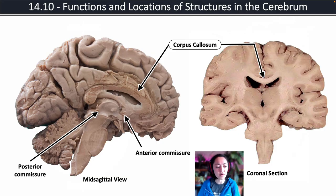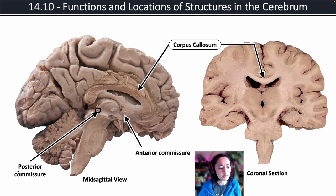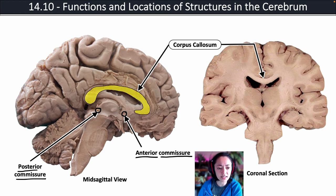Let's look at an image of the brain. Here you can see some of the connections between the right and left hemisphere. In this mid-sagittal view, there is a connection known as the posterior commissure — it's really small. And in the front, we have the anterior commissure, which is also really small. The corpus callosum is the largest connection, located above the lateral ventricles, highlighted in yellow on the left. On the right, in a coronal section of the brain, you can see it highlighted, connecting the two hemispheres.